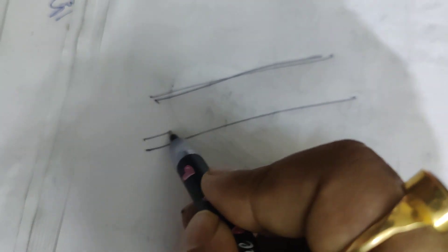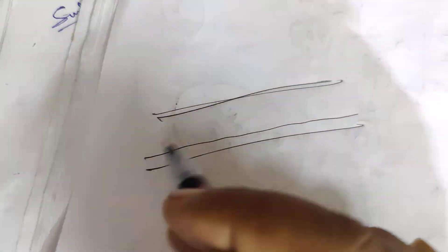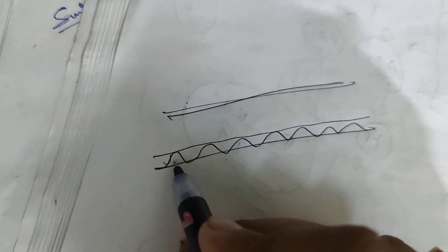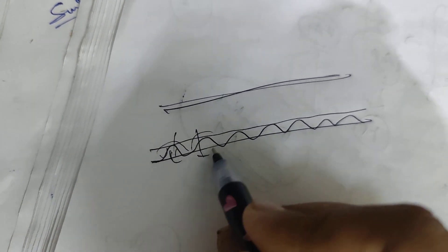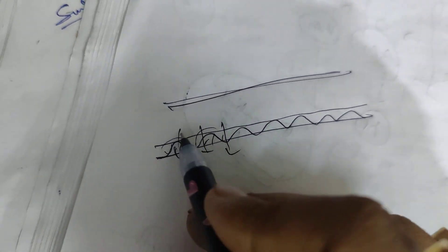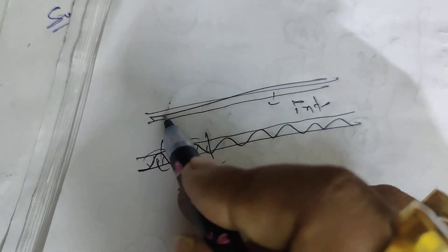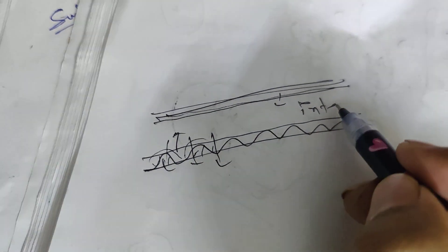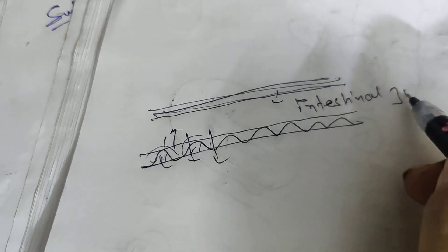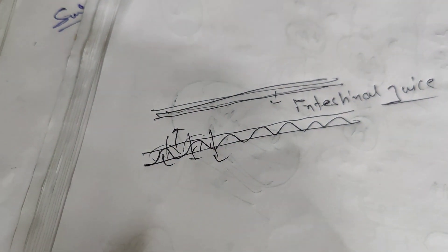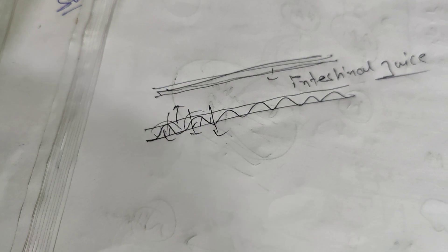Also, from the lining of the intestine, intestinal juice is produced. You know about villi — finger-like projections which increase the surface area and are supplied with blood vessels. From the intestinal lining, intestinal juice is also produced. Intestinal juice contains many enzymes which break down foods. So we have pancreatic juice and intestinal juice and bile juice together.